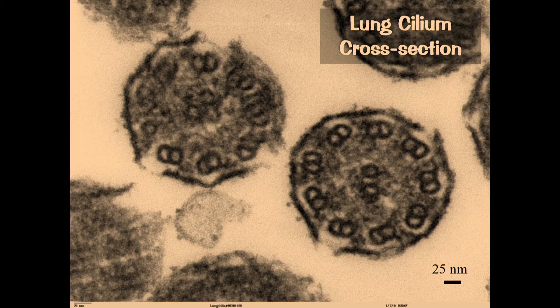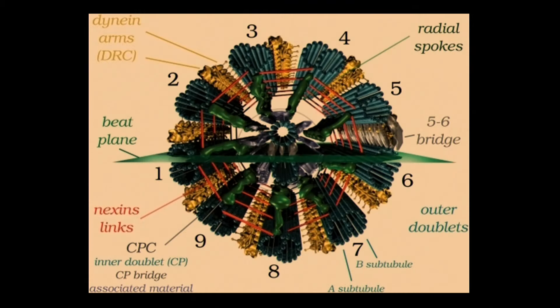A cross-section of the cilium reveals the structural components, structural engineering and design found there. This is a three-dimensional engineering diagram from the National Library of Medicine. They actually make engineering diagrams of some of these cellular structures because they are engineered — but they fail to acknowledge that behind engineering, there's an engineer. Behind designs, there's a designer.